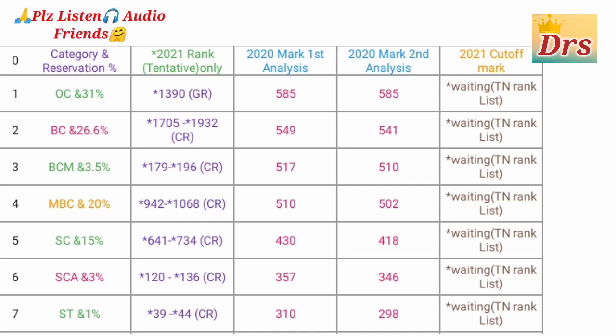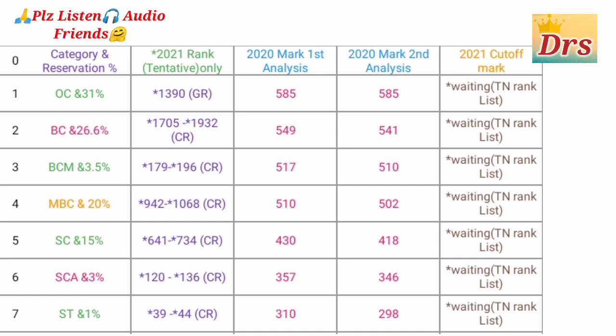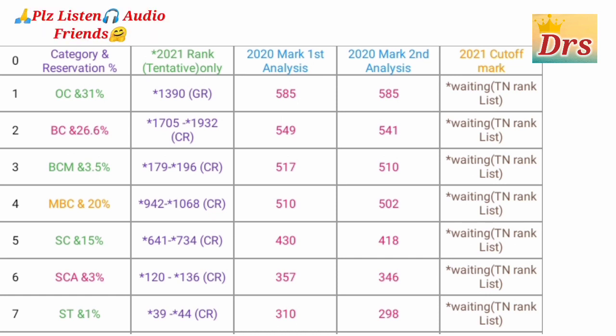Now we have BCM category. The first is a community rank. For the first analysis, it has a cut-off mark. The second analysis is 11 mark. Next, we expect that in 2021 they are starting the gap.